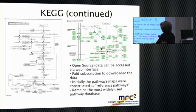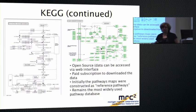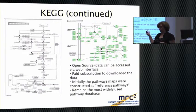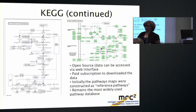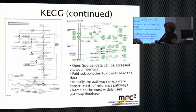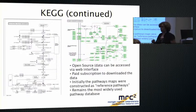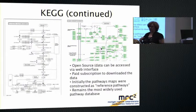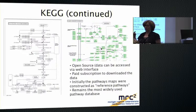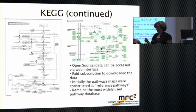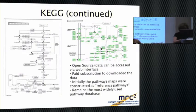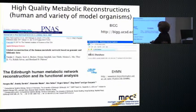KEGG includes both metabolic maps like glycolysis and non-metabolic maps like the MAPK signaling pathway. Until recently KEGG was completely free and open, but that is no longer the case. You can still browse the web pages at no fee, but downloading the data requires a substantial license fee. We considered it, but even if we paid the license, redistributing their data within our software would not be permitted — so we needed other options.